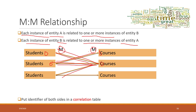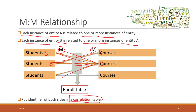The method is that we introduce a third table, which we call the correlation table — in this scenario we call it the enroll table. We split the many-to-many relationship into two one-to-many relationships. Let's see how that looks like.